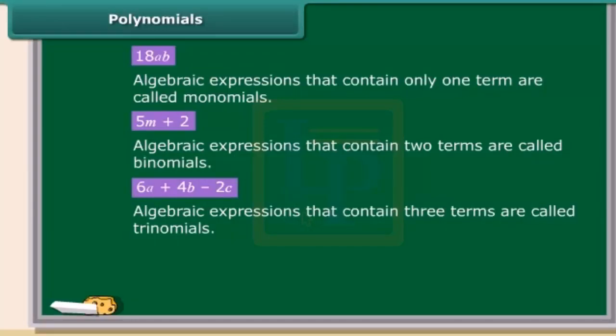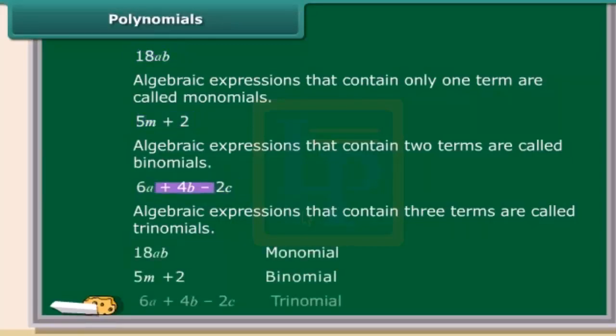So, this type of algebraic expression is called trinomial. Remember, all algebraic expressions that have one or more than one terms are called polynomials. Therefore, mononomials, binomials and trinomials are all polynomials.